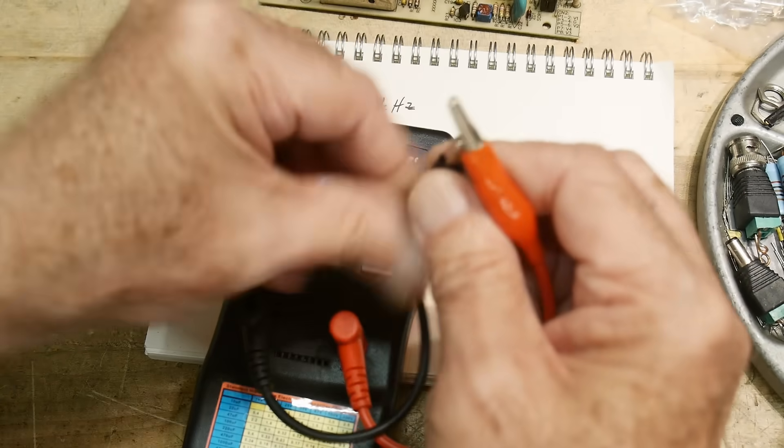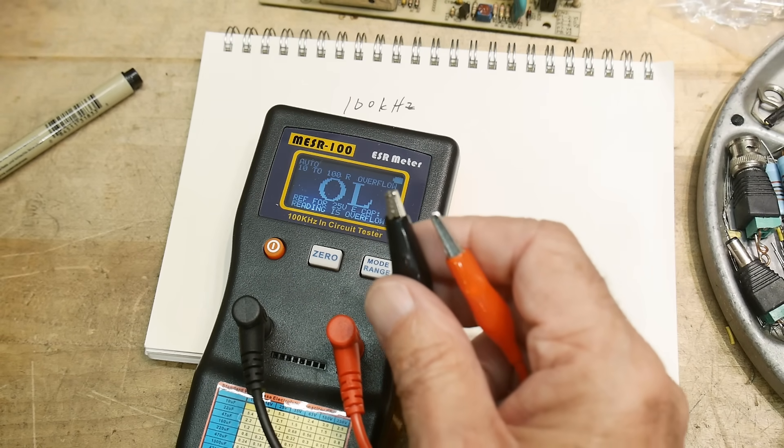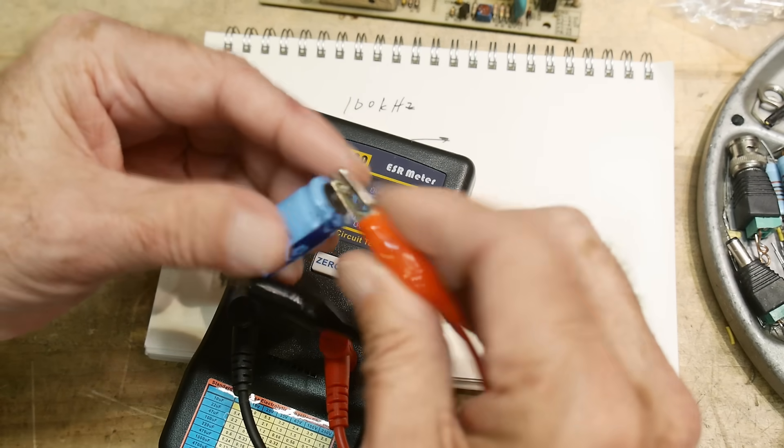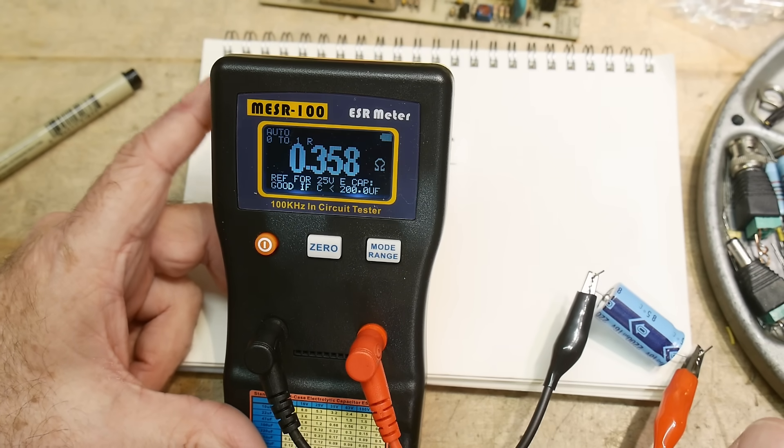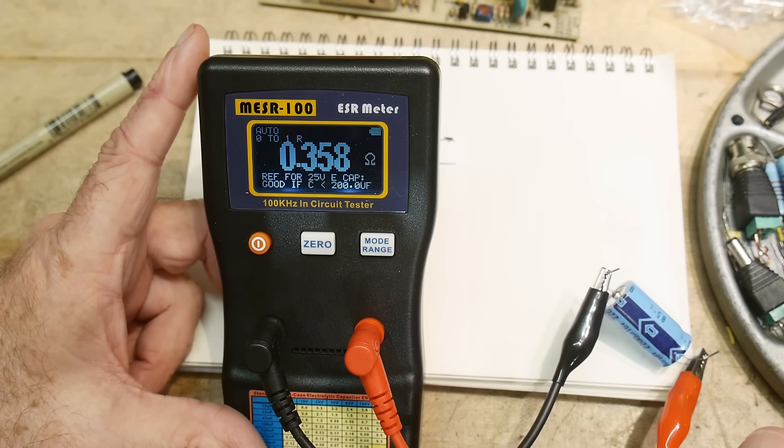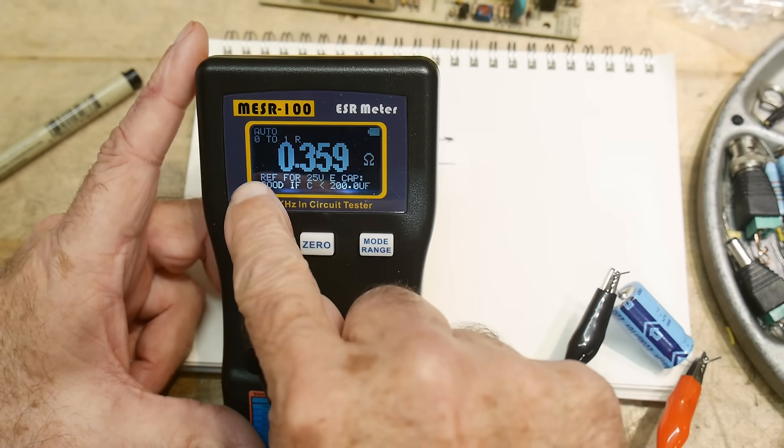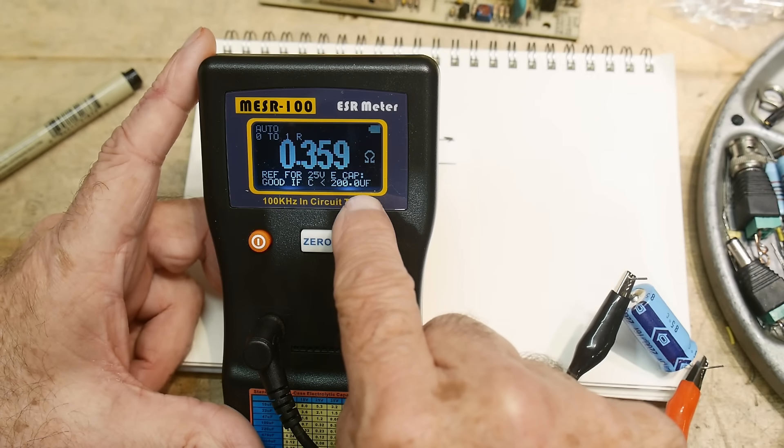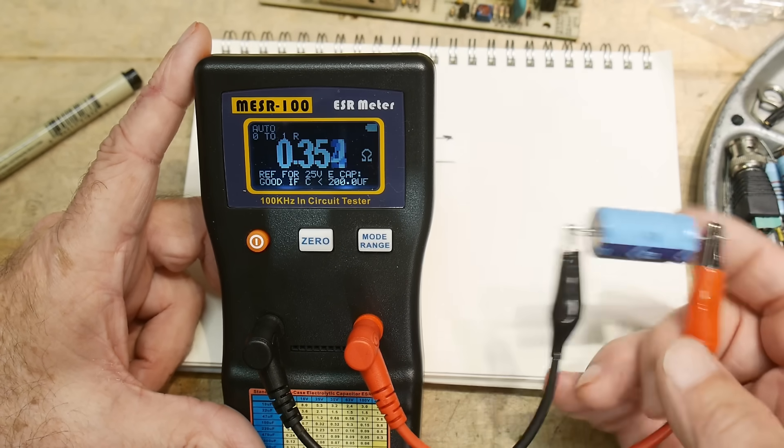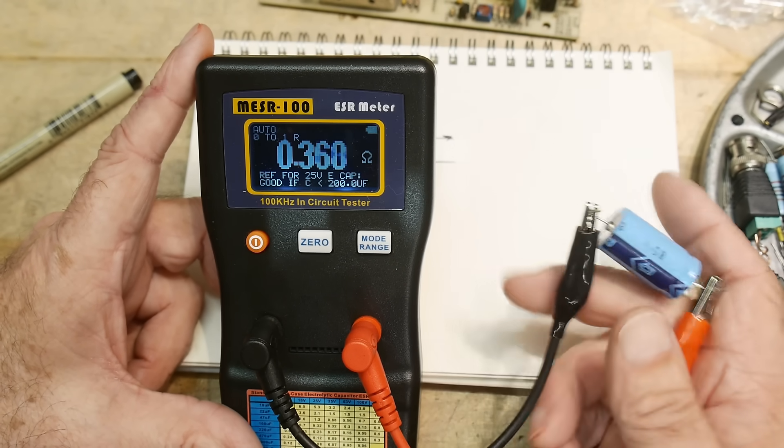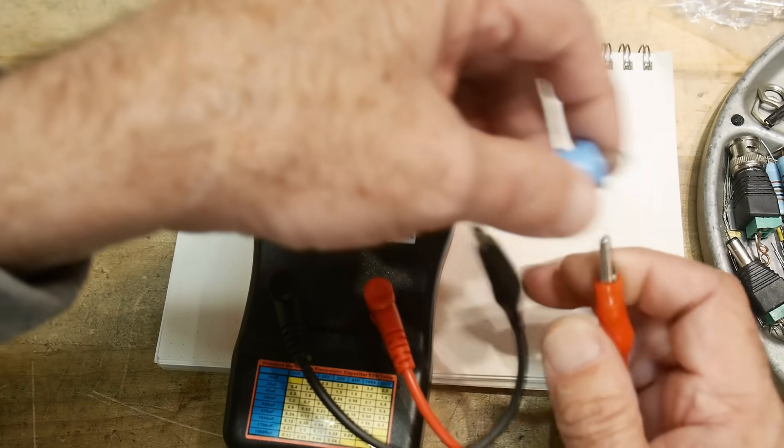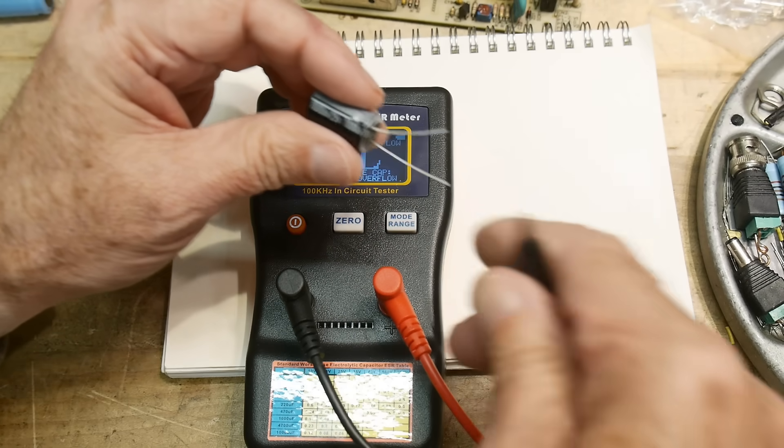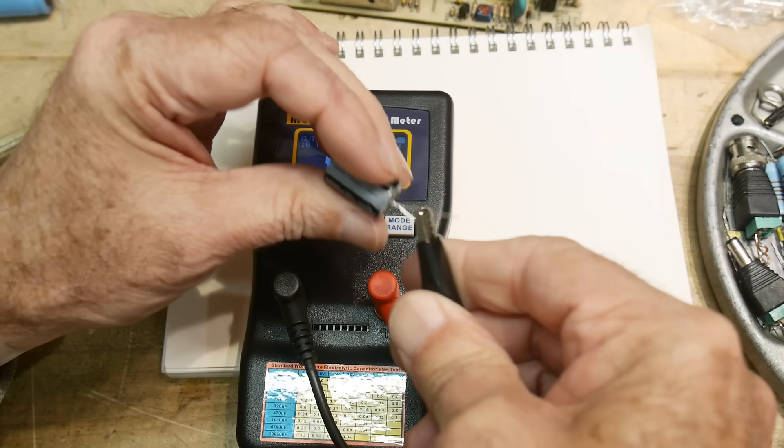And if we put in a capacitor to test, make sure your ground is in the right location and your plus is in the right location, this one is measuring 0.35 ohms. And it says that's good if your capacitor is less than 200 microfarads. And this one is 2,000 microfarads. So this would be a failed capacitor. This capacitor would be no good. Let's measure this one here. This should be a good one. This is 1,000 microfarads.